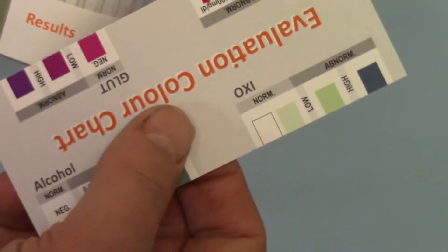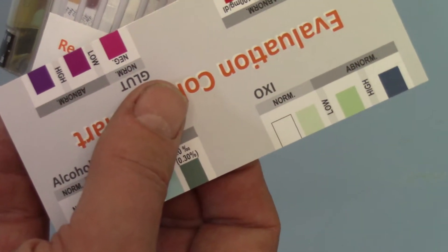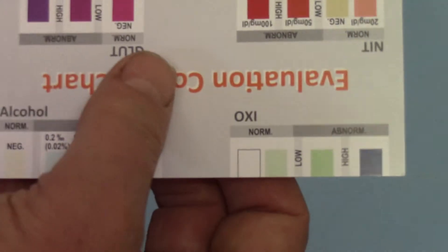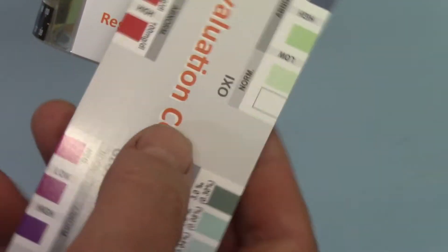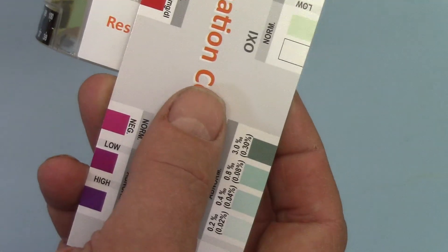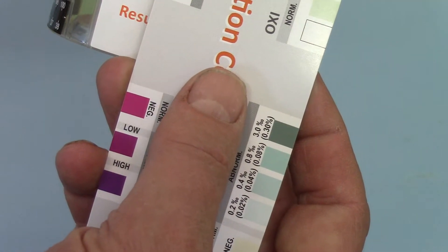So we're looking for the comparison level on the pads and coding. For nitrite, you compare against the top thing which is negative, that's normal.